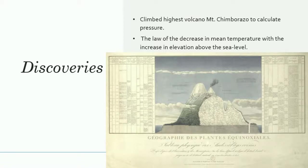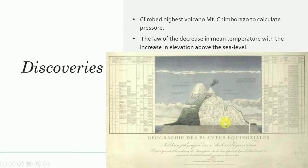He climbed the highest volcano mountain at that time — Chimborazo — in order to calculate air pressure. He was also the person who discovered the law of decrease in mean temperature with the increase in elevation above sea level. This picture shows the various plants he observed while climbing the mountain, and according to those observations he made a taxonomy of them.